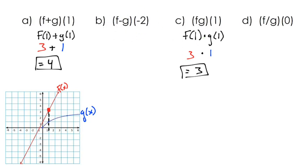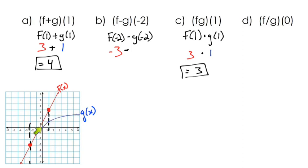Now let's look at f minus g of negative 2, which is f of negative 2 minus g of negative 2. Going to the red f function at x equals negative 2, it looks like f of negative 2 is negative 3. Then for g of negative 2, the square root function doesn't extend to negative x values — it doesn't have a function value when x is negative. So g of negative 2 is undefined.